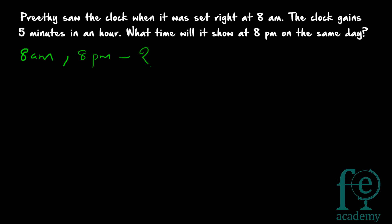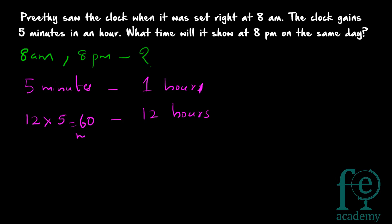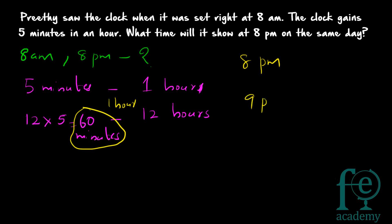You can do this question very simply. The clock gains 5 minutes in 1 hour. From 8 a.m. to 8 p.m. there are 12 hours. So in 12 hours it will gain 12 × 5 = 60 minutes. 60 minutes equals 1 hour. So the clock gains 1 hour over 12 hours. When the right time is 8 p.m., this wrong clock will be showing 9 p.m. That is our answer.